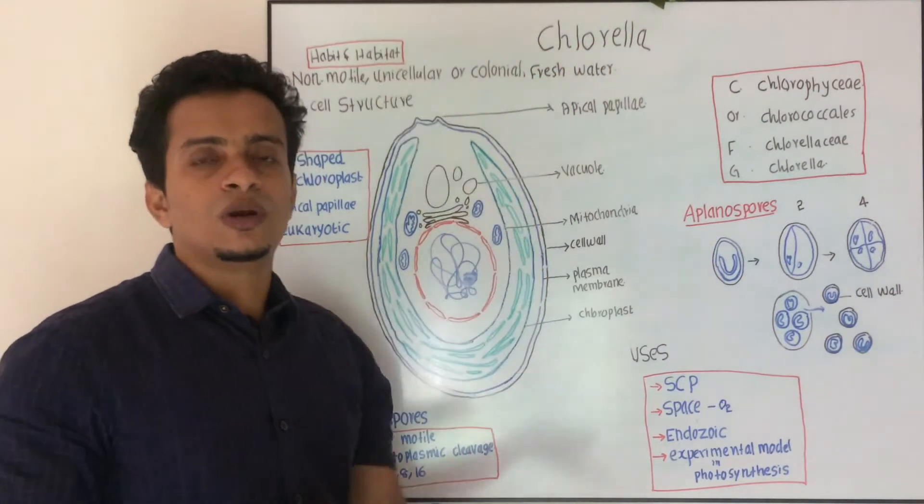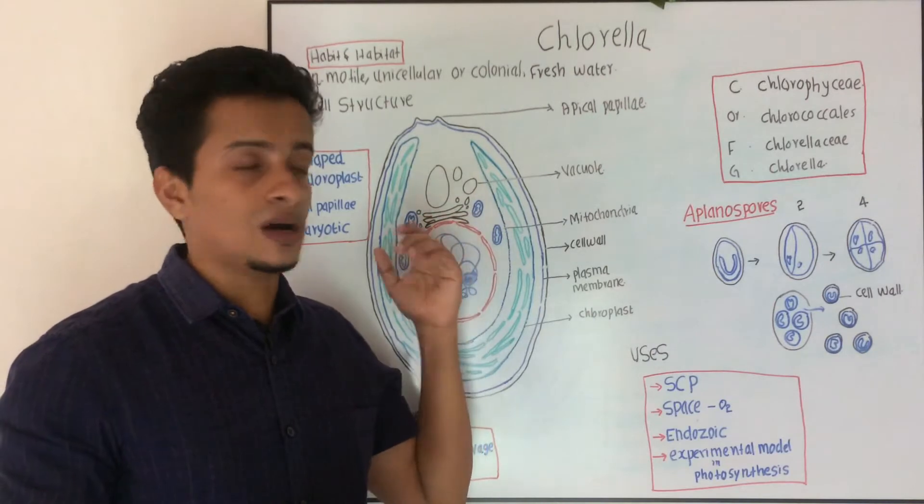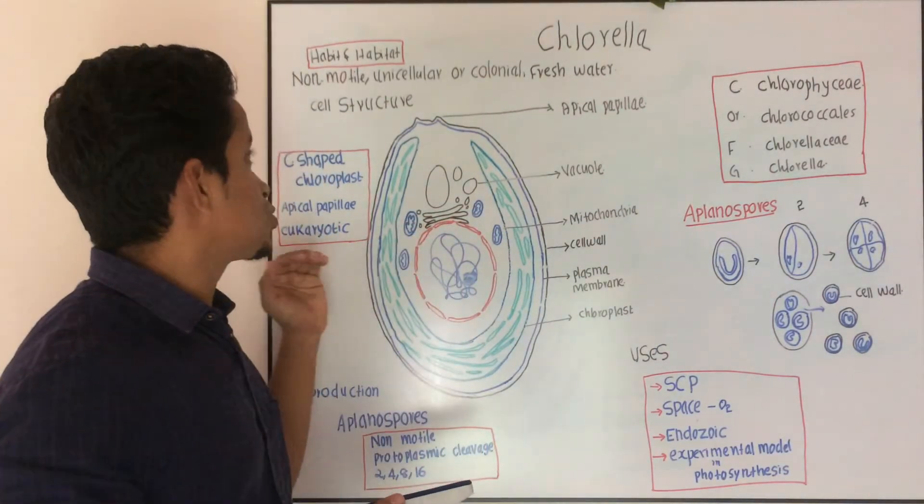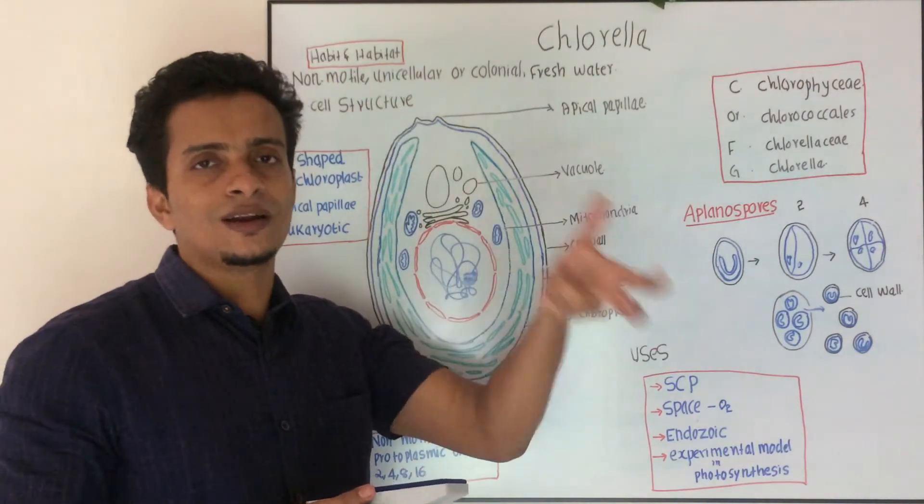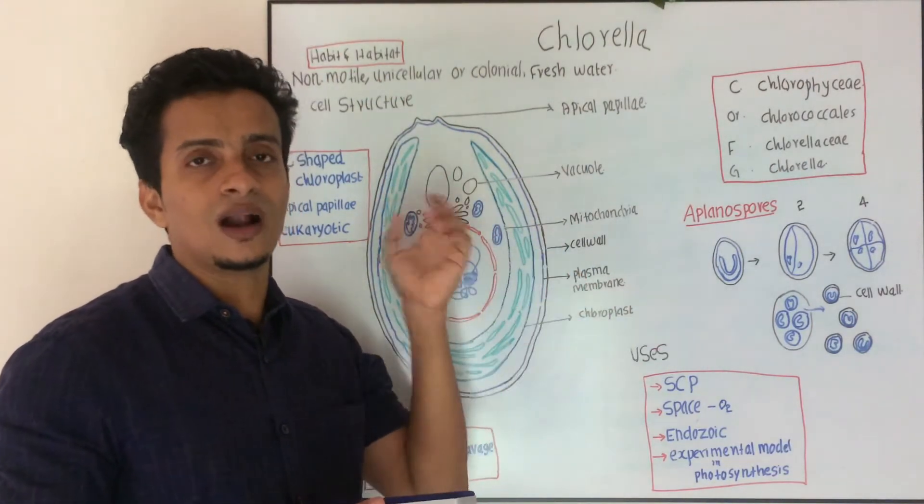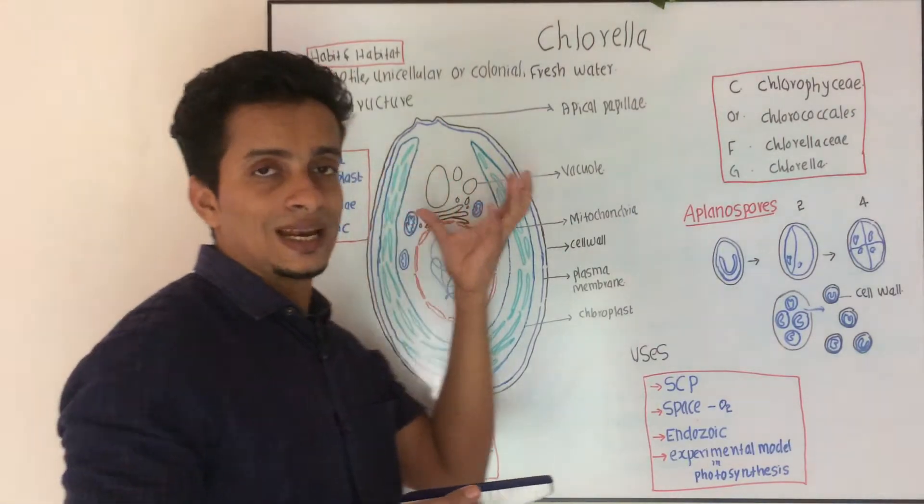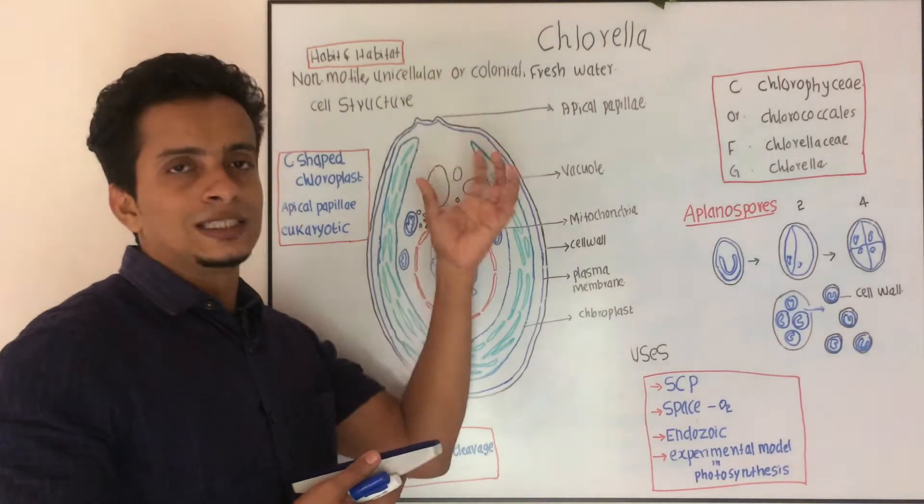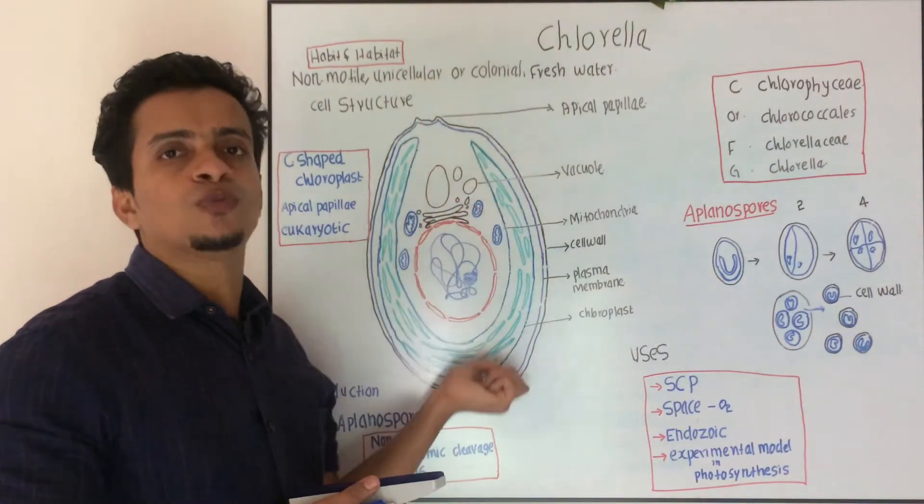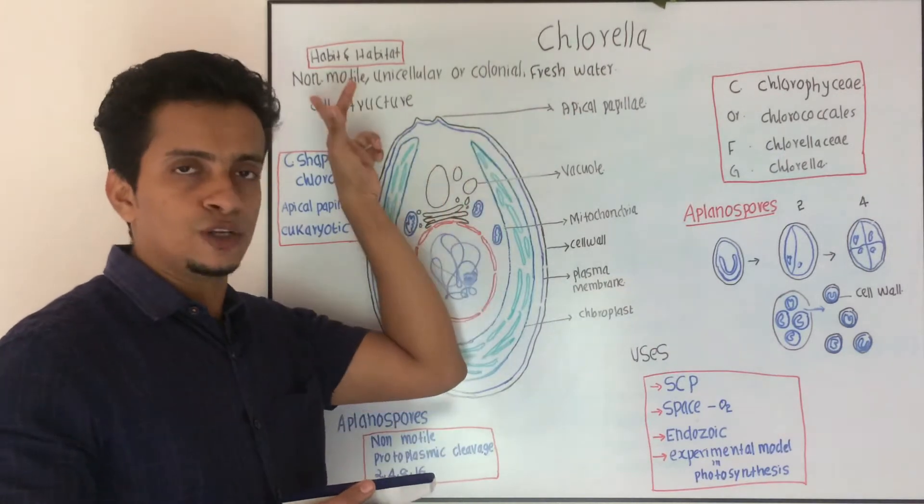This next one is the single cell structure, ultra level cell structure. It is the minute details, explained the ultra level characteristic feature of a cell. This is the unicellular form or maybe it is colonial, without flagella. That means it is non-motile.